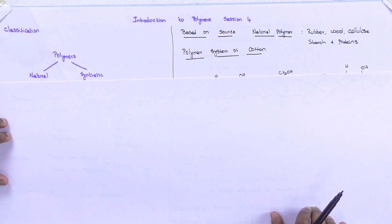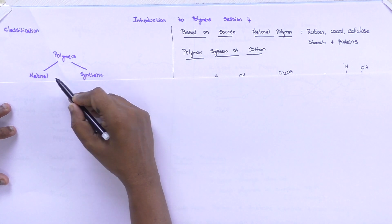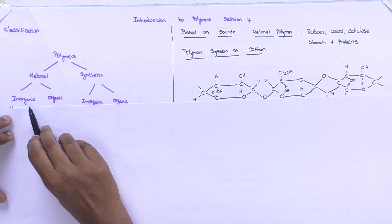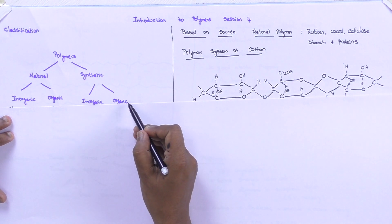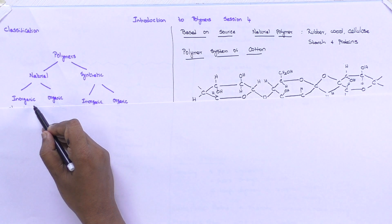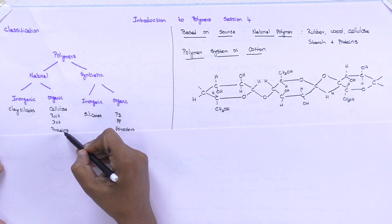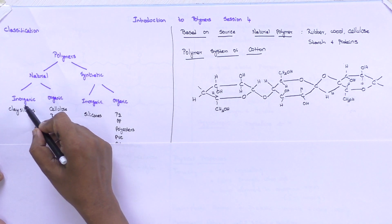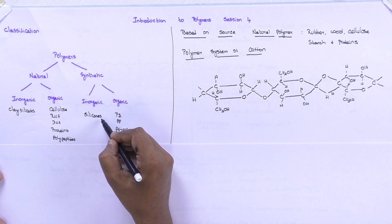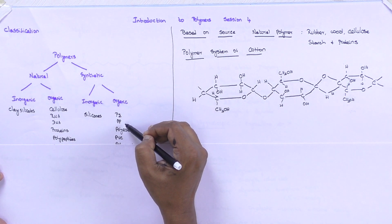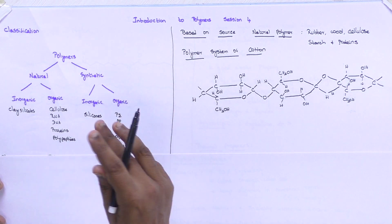Now let us move on to the classification of polymers. Polymers are classified as natural and synthetic. Natural polymers may be further classified into inorganic and organic; similarly, synthetic polymers can also be classified into inorganic and organic. Inorganic polymers include clay and silicates, while organic natural polymers include cellulose, RNA, DNA, protein, and polypeptide. Synthetic inorganic examples include silicone and silicate-based materials, while synthetic organic examples include polyethylene, polypropylene, polyesters, PVC, and polyurethanes.